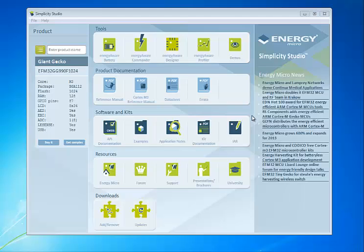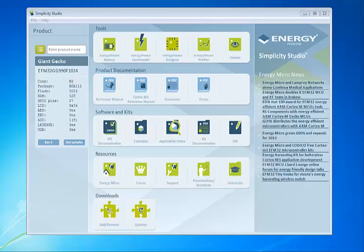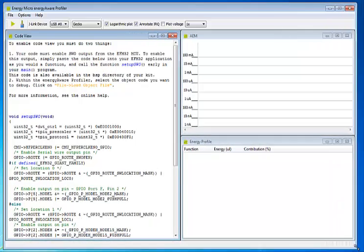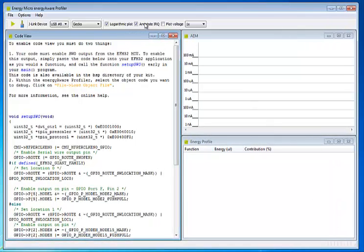The tool can be launched directly from Simplicity Studio by clicking the Energy Aware Profiler button. Once you have opened the application, you only need to connect the kit and then press the play button in order to start profiling.